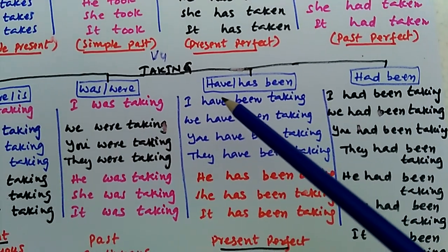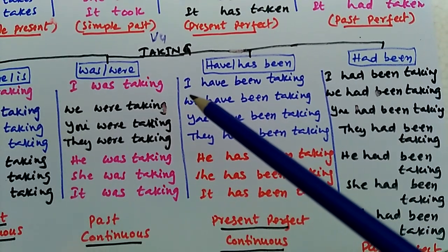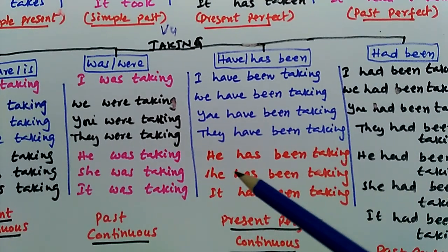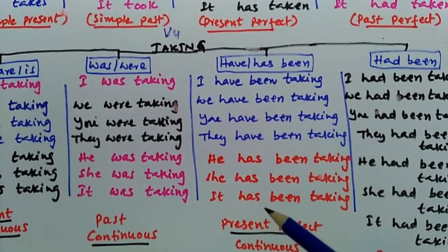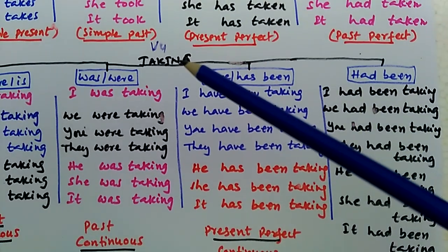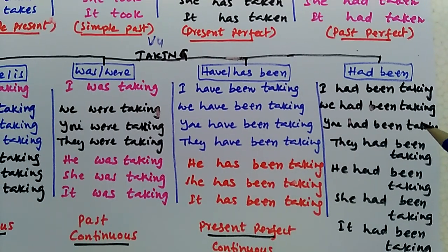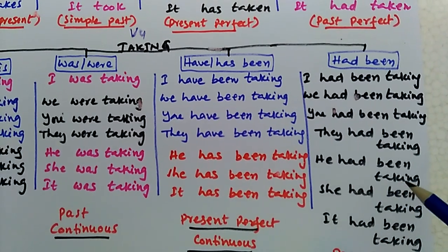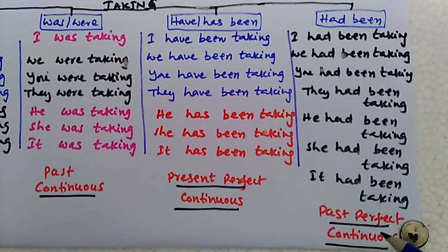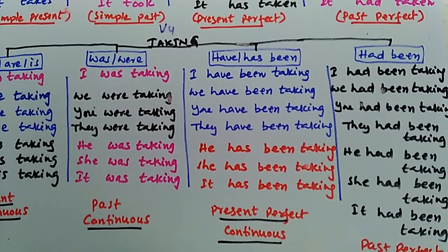And next, by adding have or has been, we can get the other table — that is present perfect continuous: I have been taking, we have been taking, you have been taking, they have been taking, he has been taking, she has been taking, it has been taking. And the fourth table is formed by adding had been to verb four: I had been taking, we had been taking, you had been taking, they had been taking, he had been taking, she had been taking, it had been taking. This table is called past perfect continuous.